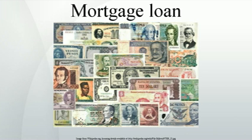Many countries have a notion of standard or conforming mortgages that define a perceived acceptable level of risk, which may be formal or informal, and may be reinforced by laws, government intervention, or market practice. For example, a standard mortgage may be considered to be one with no more than 70–80% LTV and no more than one-third of gross income going to mortgage debt.